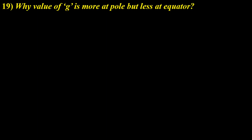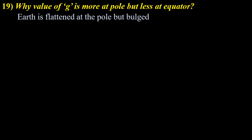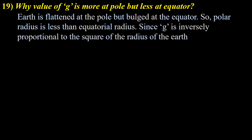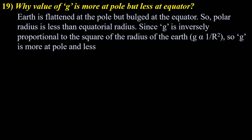Why is the value of g more at the pole but less at the equator? Earth is actually flattened at the pole but bulged at the equator, so polar radius is less than equatorial radius. Since g is inversely proportional to the square of the radius of the Earth, small g is more at the pole and less at the equator. This is the short answer.